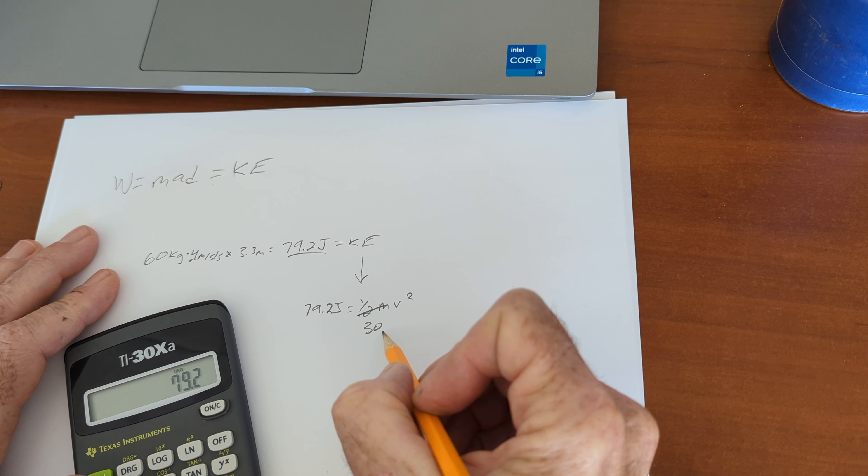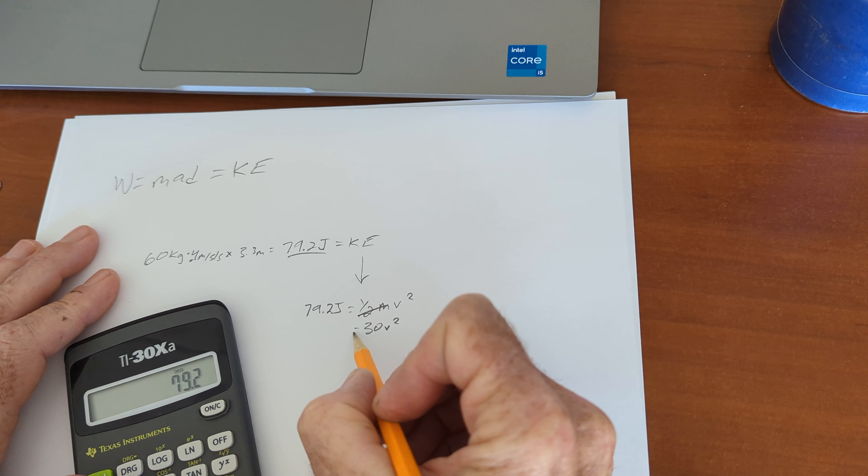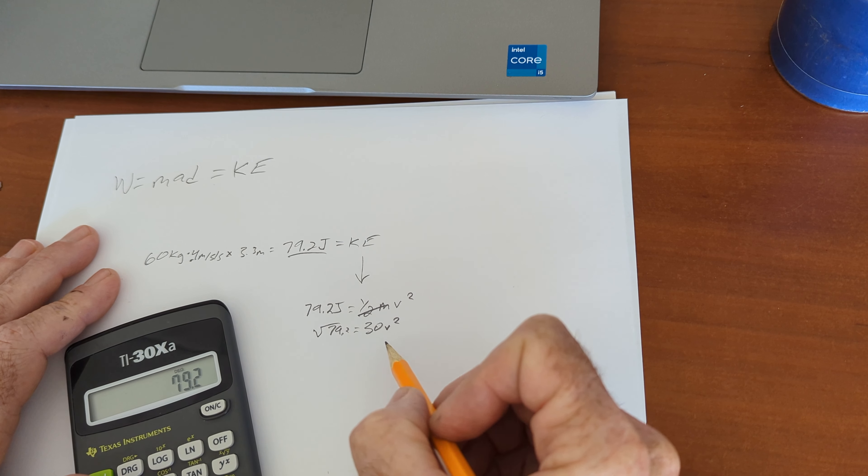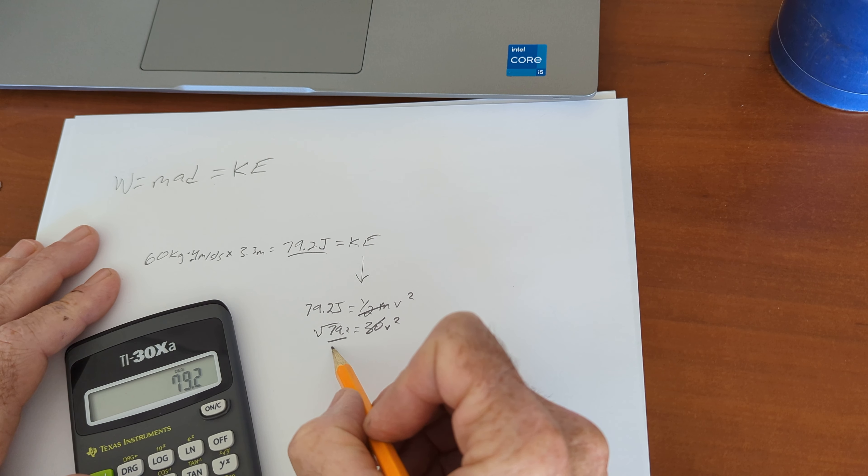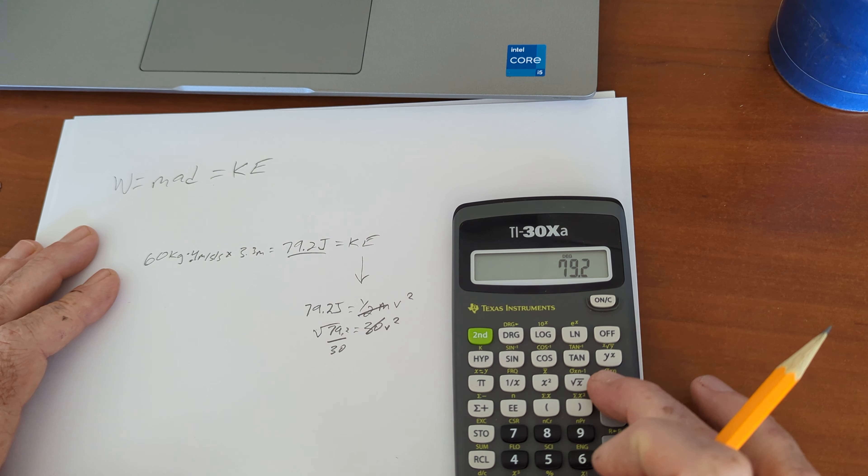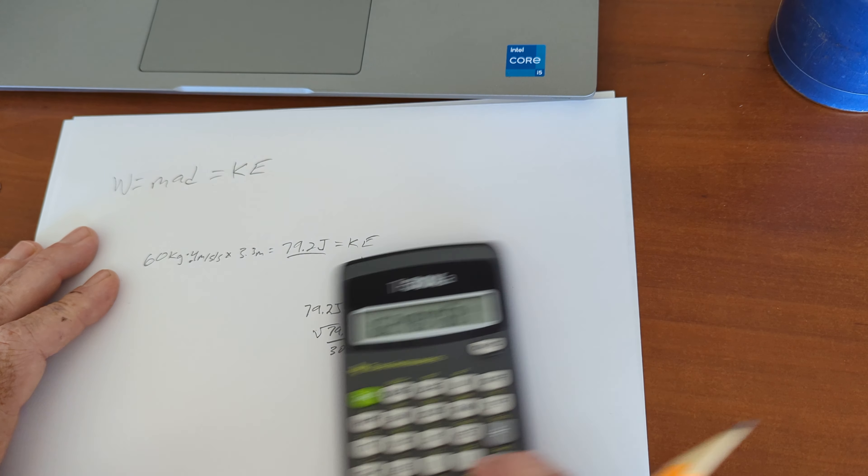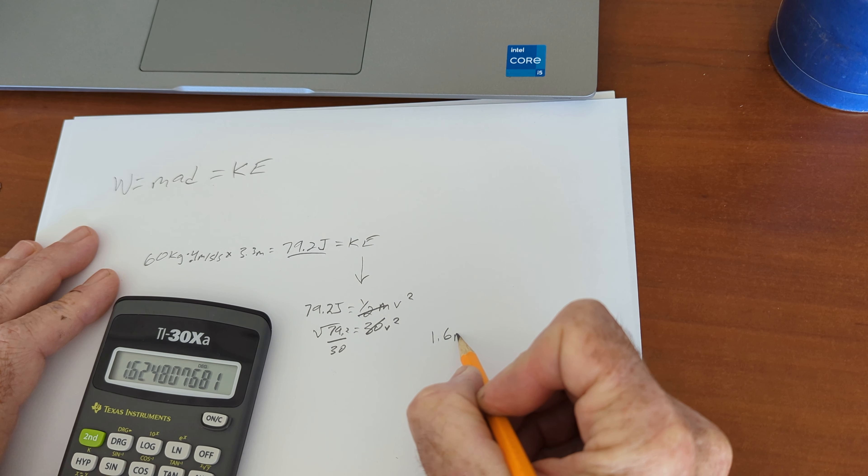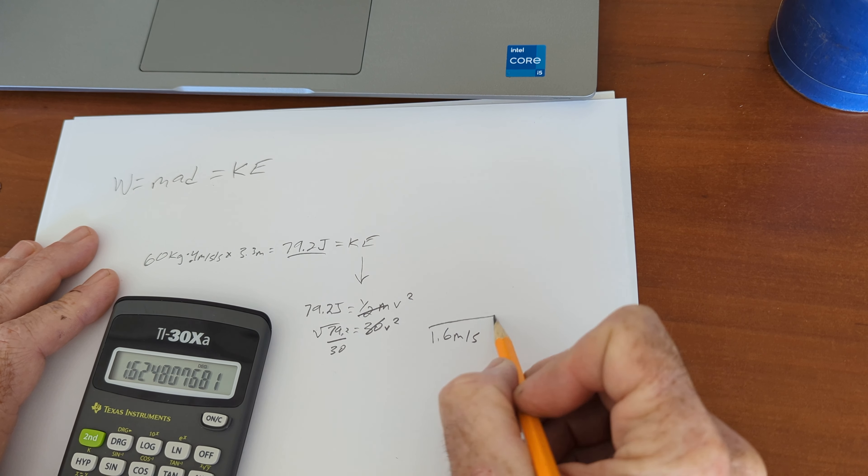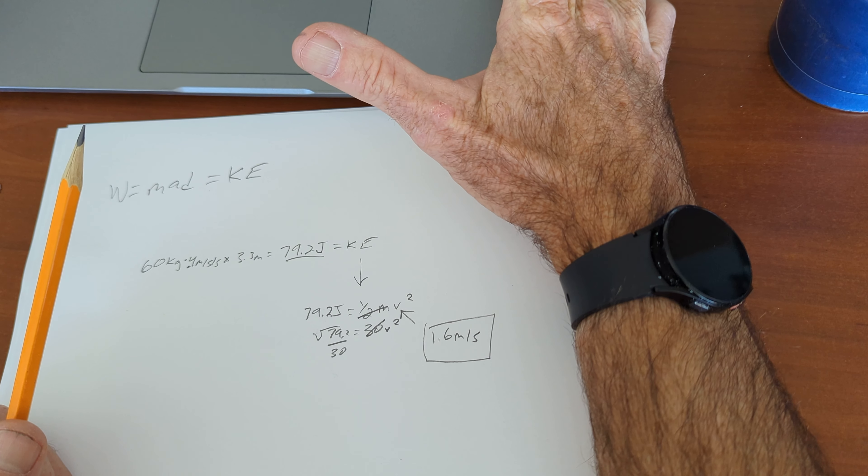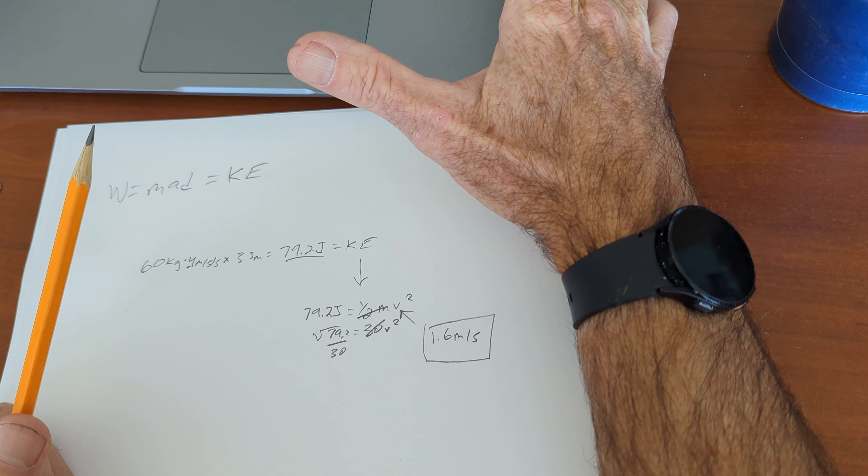So 1 half of 60 is 30. So 30 times v squared equals 79.2. So the square root of 79.2 divided by 30. So 79.2 divided by 30 equals the square root. 1.6 meters per second is the final velocity you would get out of that problem. It's just like the spring when we shot the marble today. That's the same problem.